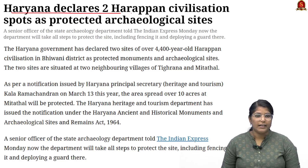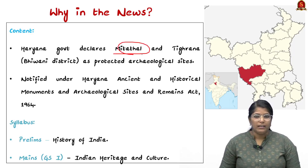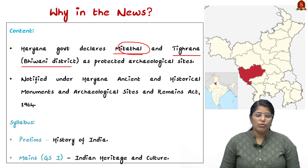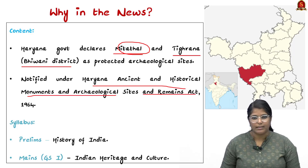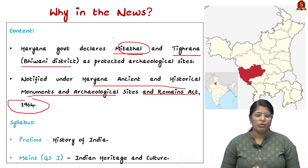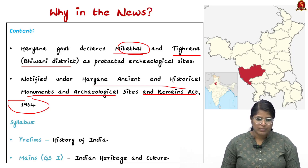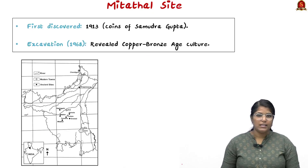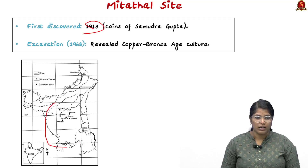This article reads: Haryana declares two Harappan civilization spots as protected archaeological sites. The two sites are Mitatel and Tigarana, both located in Bhiwani district of Haryana. They have been announced under the Haryana Ancient and Historical Monuments and Archaeological Sites and Remains Act 1964. This topic can be asked in prelims under history of India and in mains under GS Paper 1 — Indian heritage and culture. The Mitatel site was first discovered in 1913.